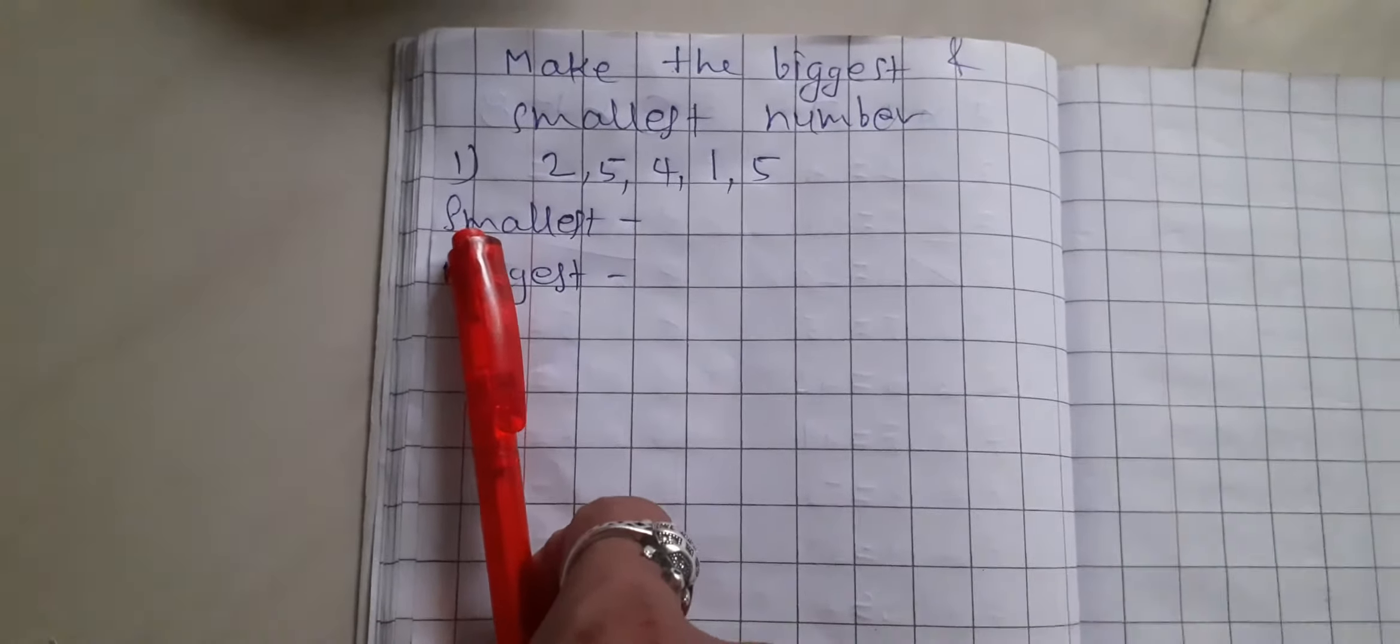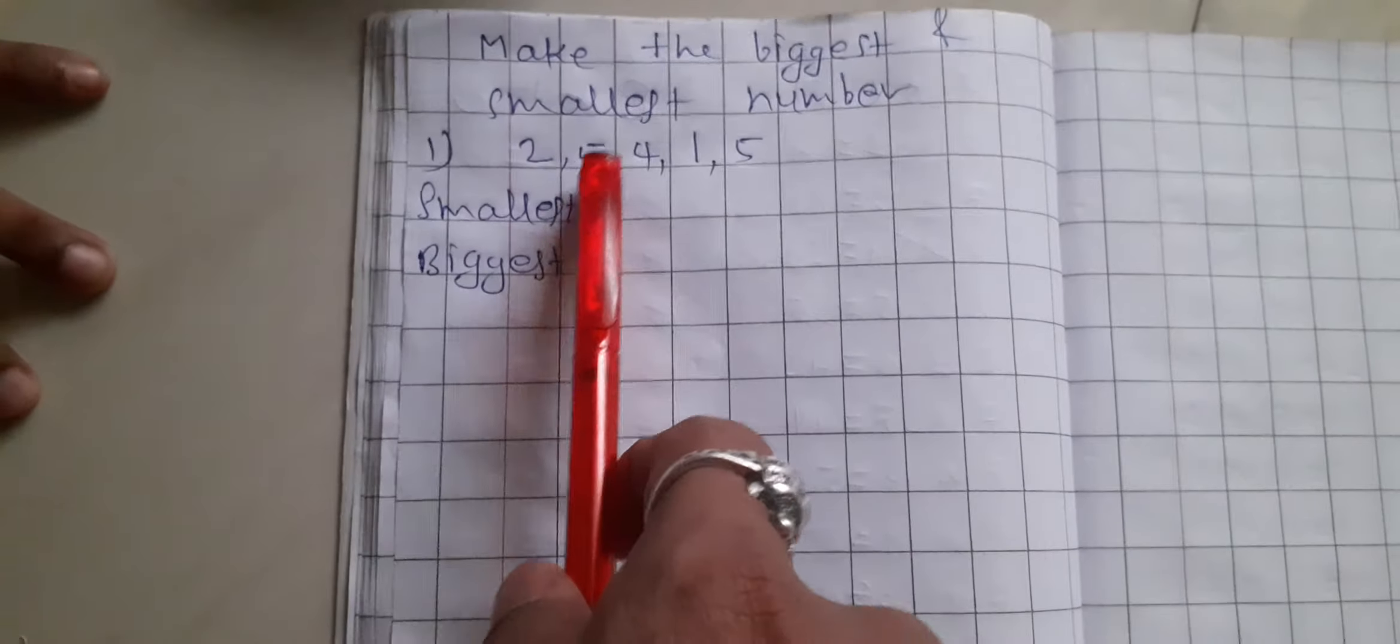Let's see here, Tonujan. Numbers are 2, 5, 4, 1.